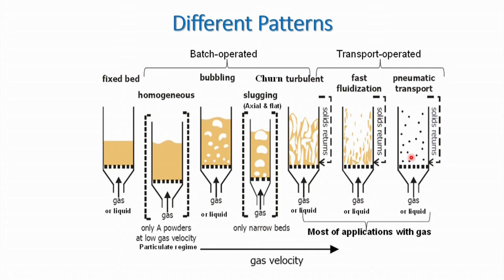There are different patterns based on the gas or liquid velocity supplied to the fluidized bed. Some are bed-operated, some are transport-operated. Bed-operated systems include fixed bed, bubbling bed, and churn turbulent bed. Fixed bed means fluidization is not yet occurring; at minimum gas velocity the solids just begin to fluidize from rest. This minimum fluidization condition is called particulate fluidized bed or homogeneous fluidization.